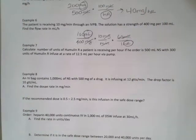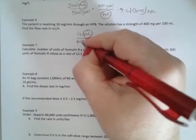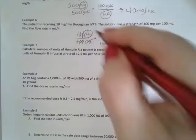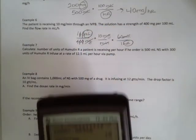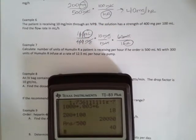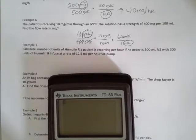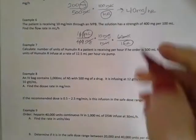I'm going to take out my two zeros. I have 10 times 60 divided by four, and I get 150 milliliters per hour.